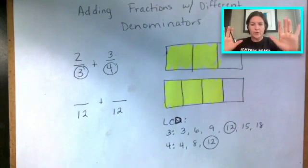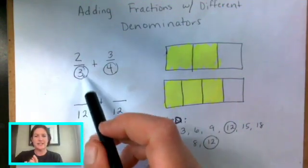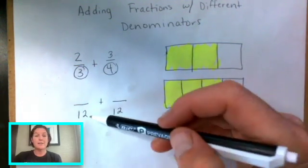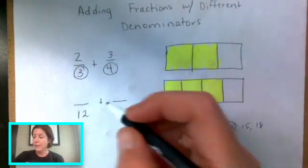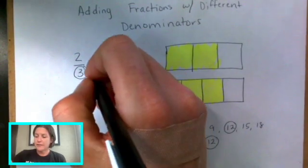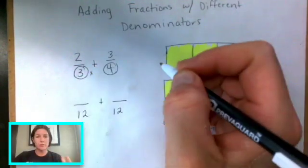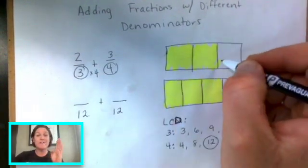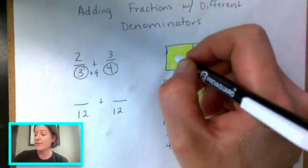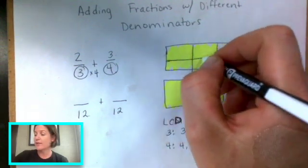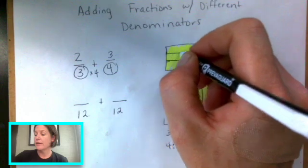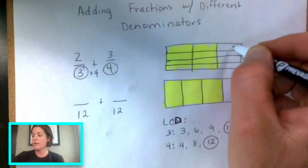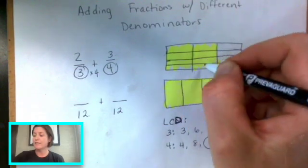Before we even mess with this again, let's go back to our model. We originally had thirds right here, and now we need to make them into 12ths. So three times what will give us 12? Three times four, right? Which means that now we need to cut this four times to get it into 12ths. So I do that going sideways. Now we have 12ths: one, two, three, four, five, six, seven, eight, nine, 10, 11, 12.